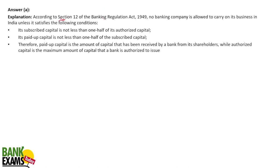Under Section 12, no banking company is allowed to carry on business in India unless: its subscribed capital is not less than one half of its authorized capital — so if authorized capital is 100 crores, they must raise at least 50 crores from shareholders. Also, the paid-up capital must not be less than one half of the subscribed capital. Subscribed capital is what shareholders have committed to pay, while paid-up capital is what has actually been received.